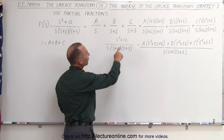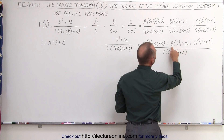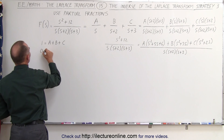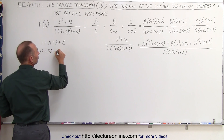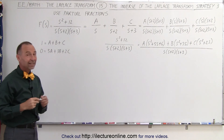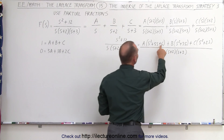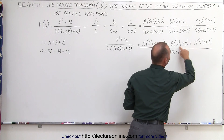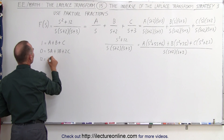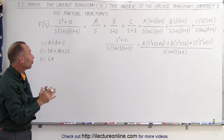The coefficient of s squared on the left must equal the sum of the coefficients on the right, so 1 equals a plus b plus c. Next, we do not have an s term on the left side, but we have 5a s, 3b s, and 2c s on the right, which means 0 must equal 5a plus 3b plus 2c. Finally, we have a single constant term 12 on the left, and 6a from the right, so 12 must equal 6a. We now just have to solve those three equations simultaneously.